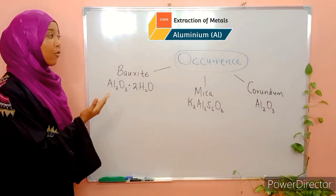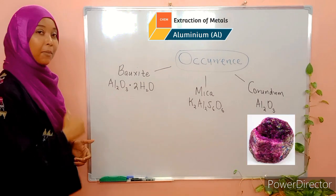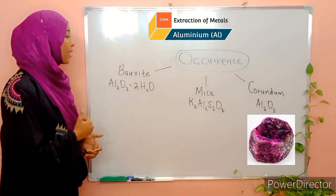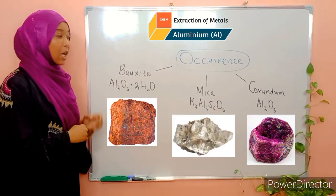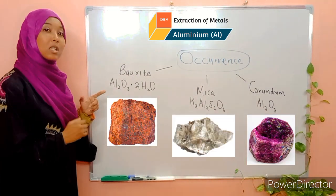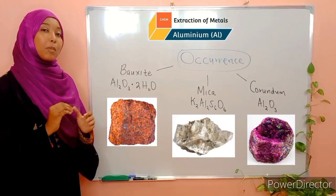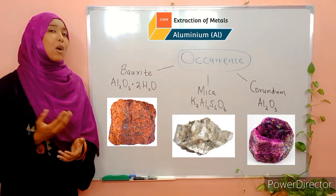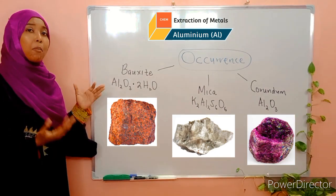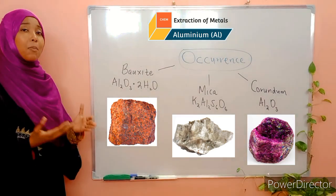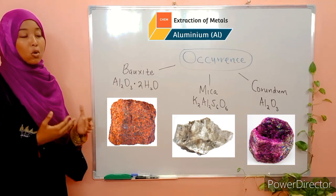Aluminium has the following ores: there is corundum, mica, and lastly bauxite. Now bauxite is considered to be the main ore of aluminium. As you can tell from the chemical formula, bauxite is simply hydrated aluminium-3-oxide.